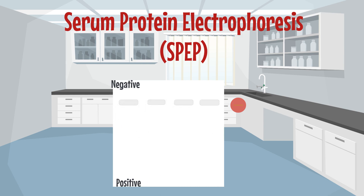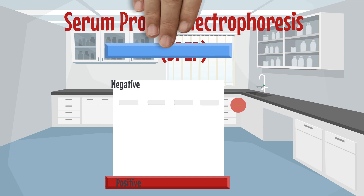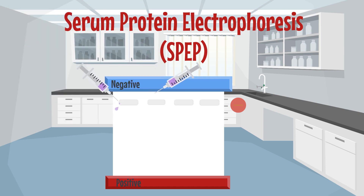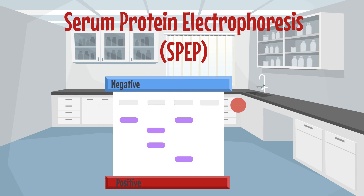Two electrodes through which electricity runs — one positive terminal and one negative — are placed on either end of the gel medium. A solution containing proteins is placed into the wells. In this case, that solution is plasma. A control solution is placed in another well. Essentially, your subject's plasma is run against a control plasma. Proteins are negatively charged.